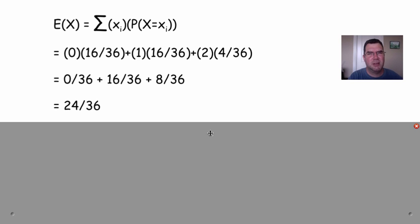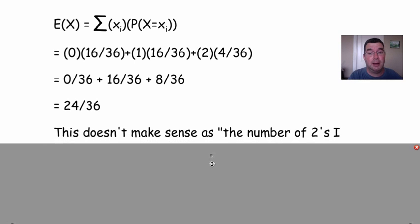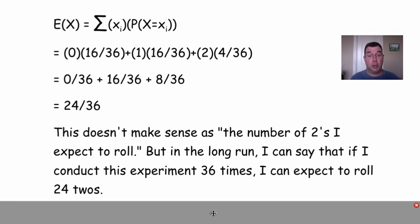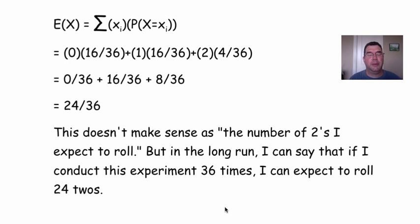24/36ths of a 2, which is less than, it's going to happen less than once. And it really doesn't make sense, but remember we're thinking about expectation as things that are going on in the long run. So think about me conducting this experiment 36 times, I would expect to see 24 twos out of the 36 trials. So it makes a little bit more sense when you think about it in terms of what's going to happen on average in the long run if I repeat this over and over again. So that's expectation, and if you have any questions on this, please let me know, and I'll see you tomorrow.